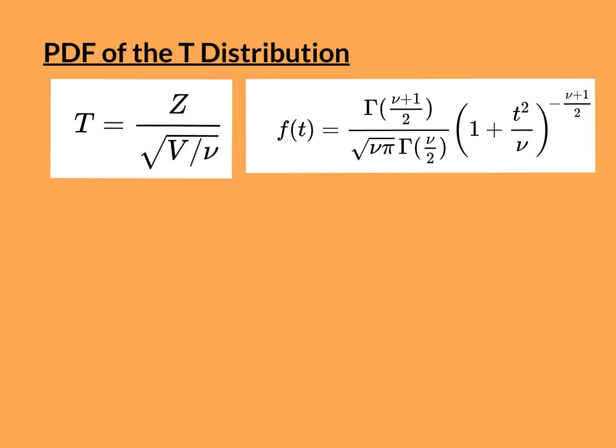In this video, I'm going to show you how to derive the PDF of the T-distribution from the definition of the T-distribution. I've got some formulae copied from Wikipedia. This is the definition of the T-distribution in terms of a standard normal divided by the square root of a chi-square distribution of nu degrees of freedom divided by nu. We are going to go from that definition to the formula for the PDF of the T-distribution, which is valid from negative infinity to infinity.